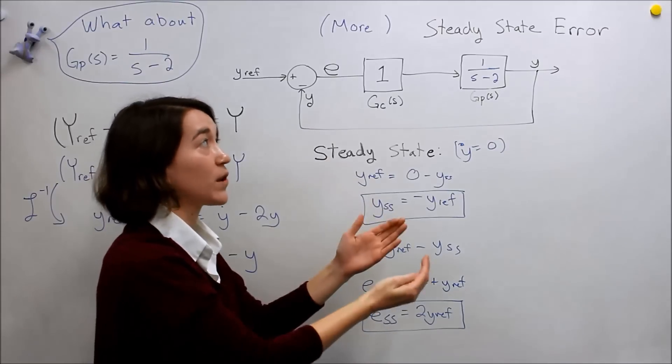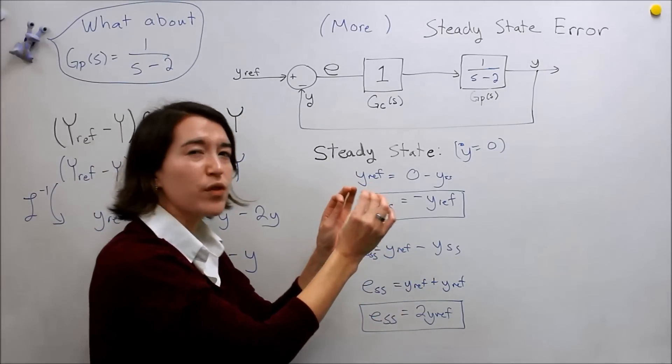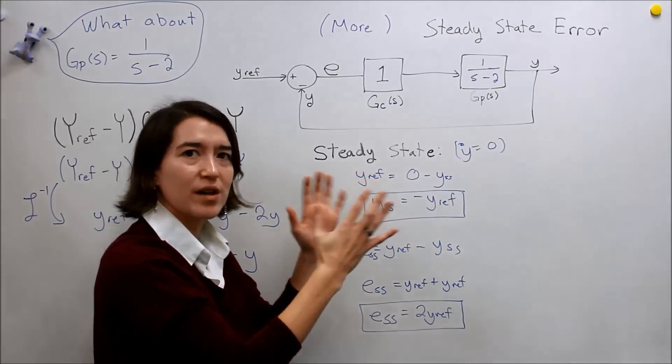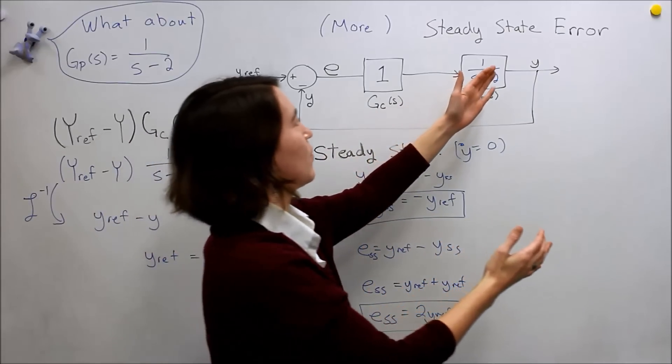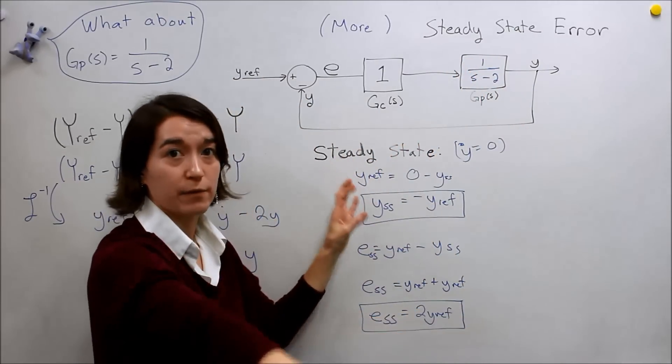So in a sense it is an equilibrium point, but the moment that you move a little bit from that, say there's some noise or something, your system is unstable and it will move away from that point.